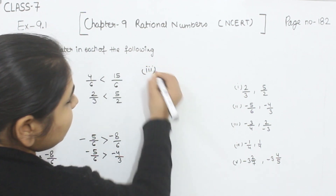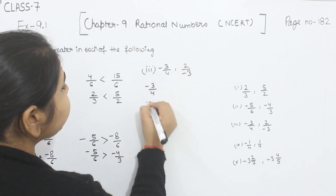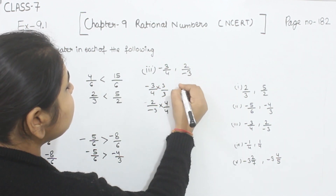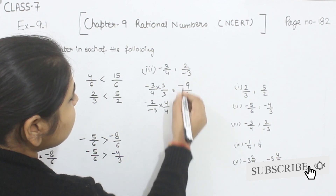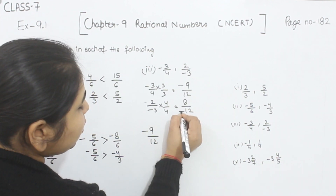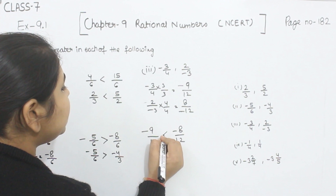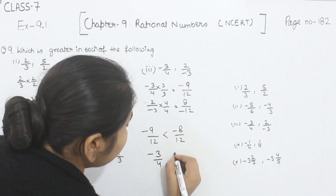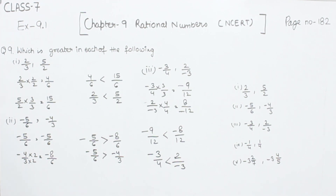Now comes part 3. In part 3 we have -3/4 and 2/(-3). We are going to equalize the denominators by multiplying each by the other's denominator. So 3×3=9 and 4×3=12, giving -9/12. And 4×2=8 and 4×3=12, giving 8/12 — shifting the negative to the numerator makes it -8/12. Now comparing -9/12 and -8/12, since the smaller absolute value is greater for negatives, -8/12 is the greater number. This represents 2/(-3), so 2/(-3) is the greater one.